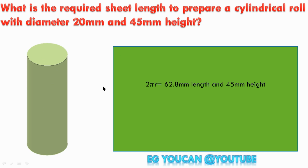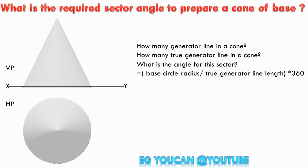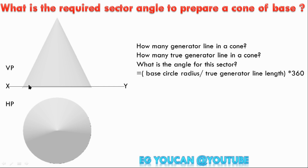What is the required sector angle to prepare the cone? The sector angle formula uses the slant height. To substitute the angle — how many generators are in one cone? There are infinite generators. Where is the true generator? If you have left-extreme and right-extreme, those are true. We can divide the cone into 8 or 12 generators for the top view.